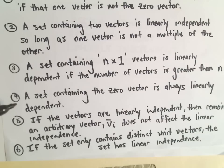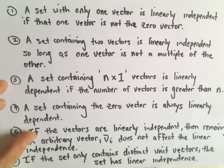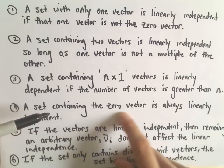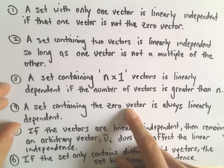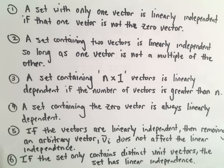If you have a set containing the zero vector, that's always linearly dependent. That goes back to the very first thing we said. You could multiply all the other vectors by 0, but then multiply the zero vector by any non-zero number, and you would get the zero vector, which would imply they're linearly dependent.